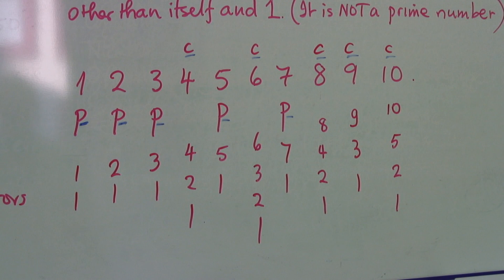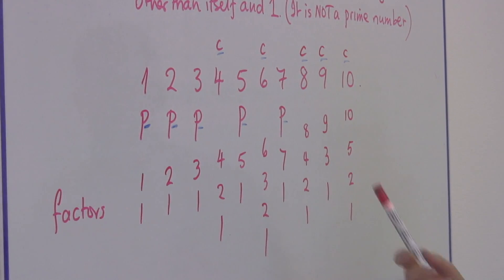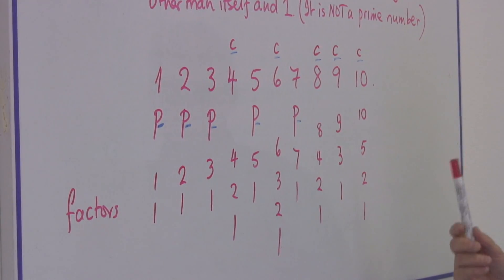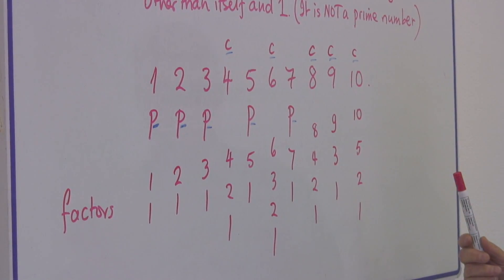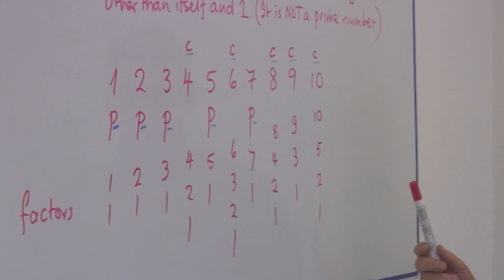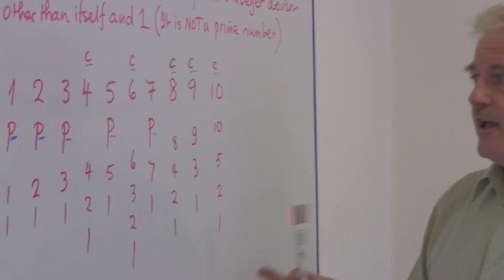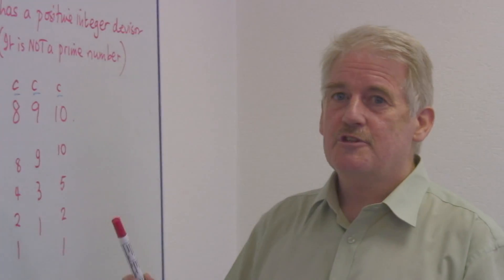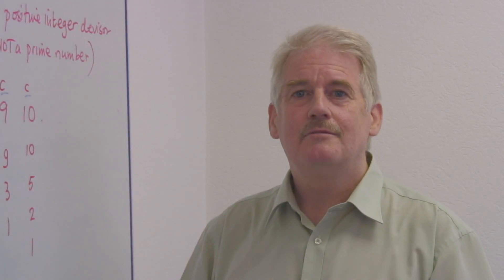So it's as simple as that. If there are more factors than two — that is, the number itself and one — then it is a composite number.